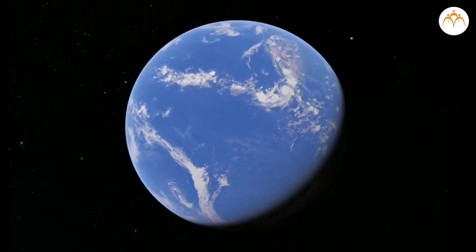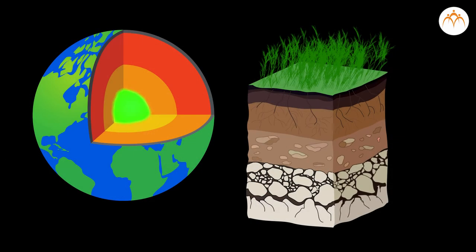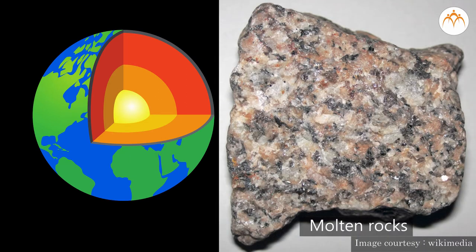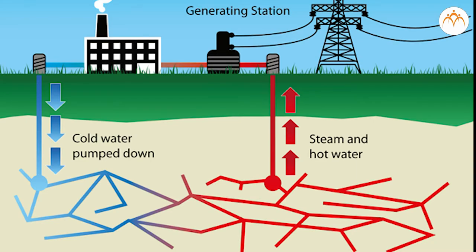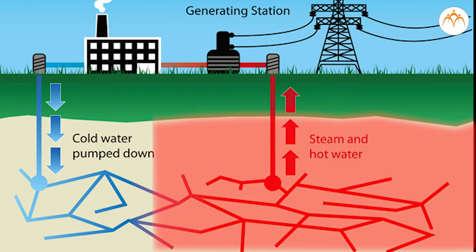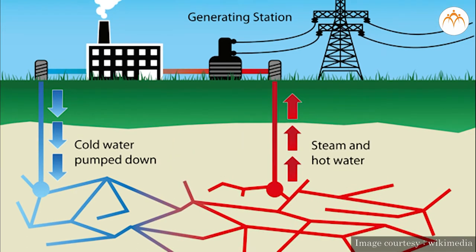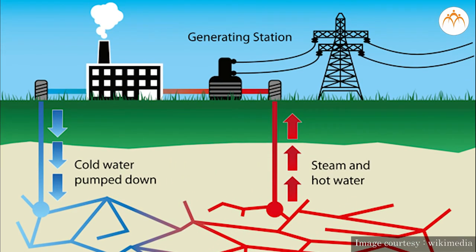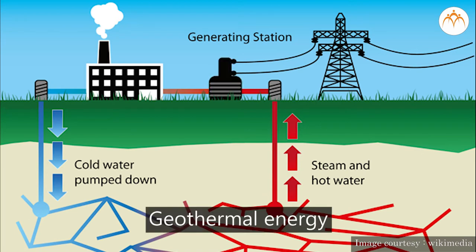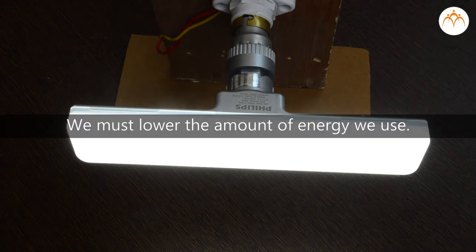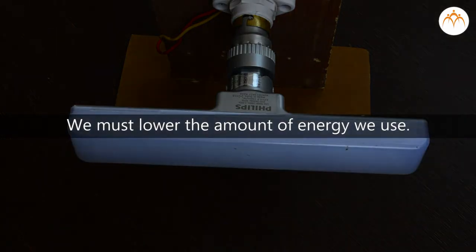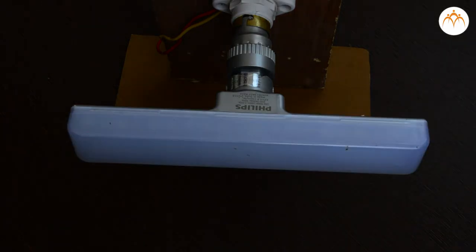Beneath the Earth's crust is a central core estimated to be very hot. Molten rocks heat the layer above, and water trickling through the rocks is heated and turned into steam. The steam can be used to drive generators and produce electricity. This is called geothermal energy.